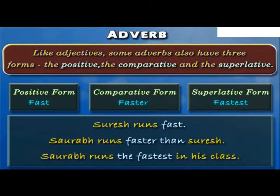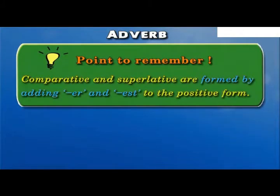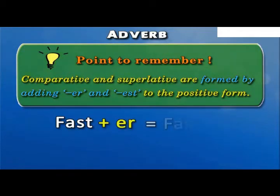Saurabh runs the fastest in the class. Here, fastest is an adverb in the superlative form as Saurabh is being compared with the entire class. Also, it is very important to note that comparative and superlative forms are formed by adding -er and -est respectively to the positive form. For example, the word fast, when appended with -er, becomes faster, which is the comparative form of the adverb fast.